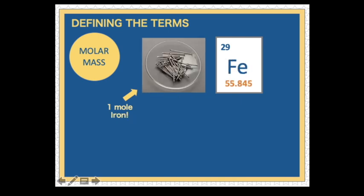Last example. This is a sample of 1 mole of iron. 1 mole of iron weighs 55.845 grams. So, we say, or we write, molar mass of iron is equal to 55.845 grams per mole.